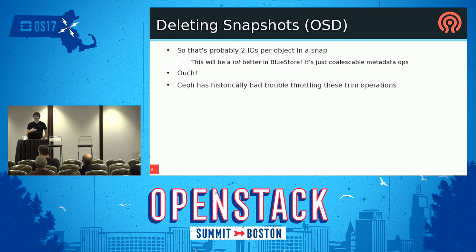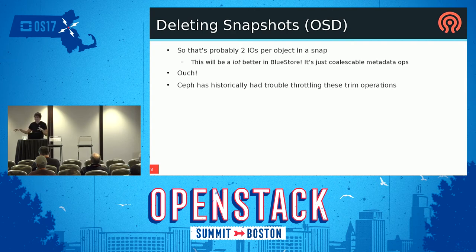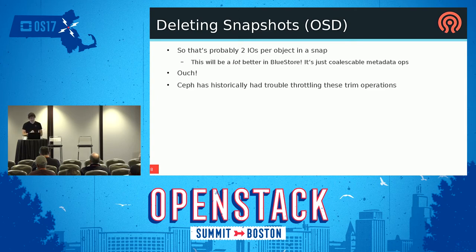Sometimes snap trimming requires a lot more than two IOs — XFS may not have metadata in memory, or it may have journaled 50 unlinks and then receive a 51st, requiring it to actually flush those unlinks from folders on disk. This makes scheduling unpredictable. This is much better in BlueStore because all metadata is coalescible into LevelDB. CephFS historically had problems throttling trim operations because when we thought XFS was done unlinking a file, it wasn't actually done — the work would just pop up later.